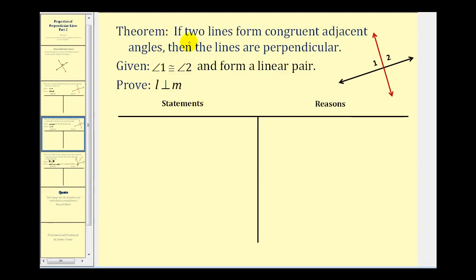Now let's take a look at our theorem and the proof. We want to prove: if two lines form congruent adjacent angles, then the lines are perpendicular. More specifically, if we know that angle one and angle two are congruent and form a linear pair, then line L and line M are perpendicular. Remember, in order to prove that line L and M are perpendicular, we must prove that angle one and angle two are right angles, and that follows from them both having a measure of ninety degrees.